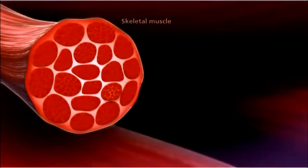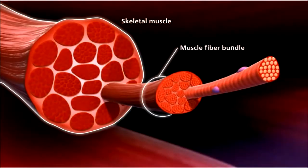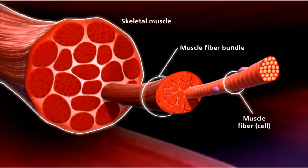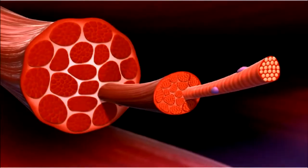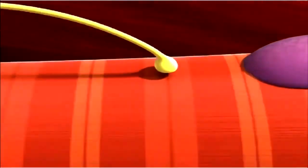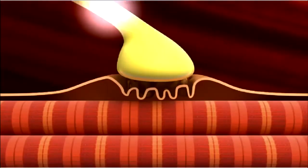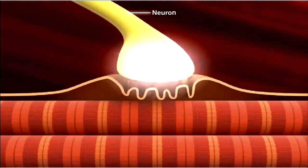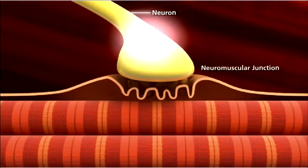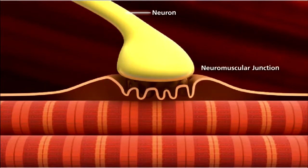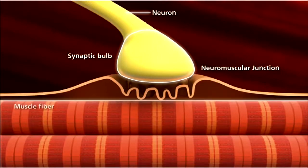Skeletal muscles are composed of bundles of muscle fibers. Muscle fibers are long cylindrical cells containing several nuclei. Muscles will contract or relax when they receive signals from the nervous system. A neuromuscular junction is the site of the signal exchange — this is where the synaptic bulb of an axon terminal and muscle fiber connect.